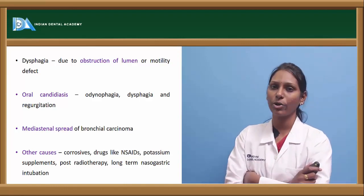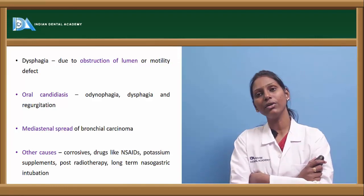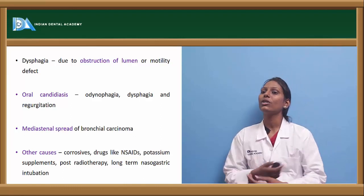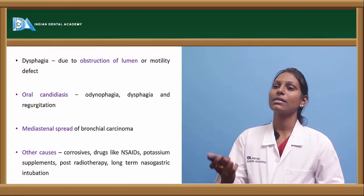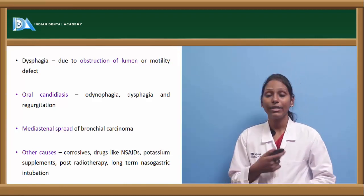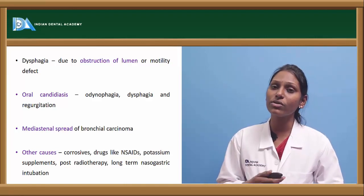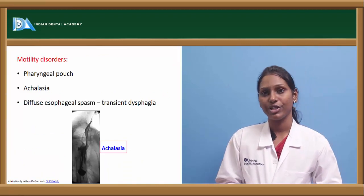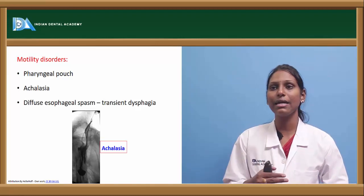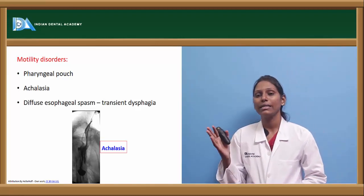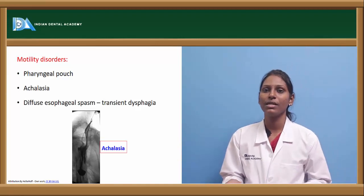Mediastinal spread of bronchial carcinoma causes extrinsic compression leading to dysphagia. Other causes include corrosives, NSAIDs, bisphosphonates, potassium supplements, radiotherapy, post-radiotherapy cases, and long-term nasogastric intubation. Other motility disorders include pharyngeal pouches, achalasia, and diffuse esophageal spasm — the latter causes transient dysphagia while the above two can cause permanent dysphagia if untreated.